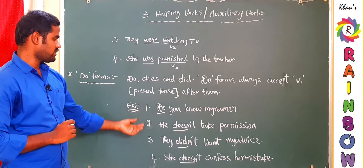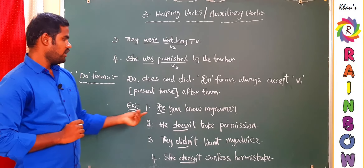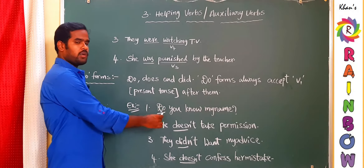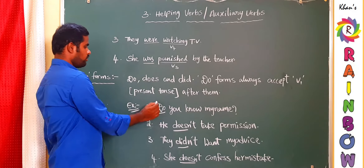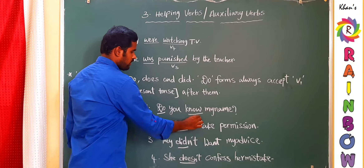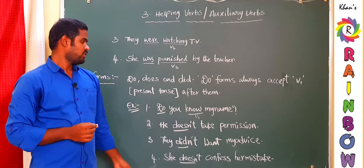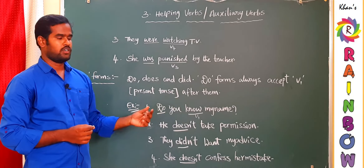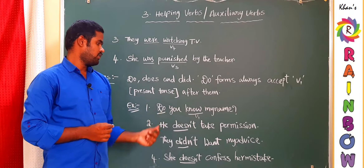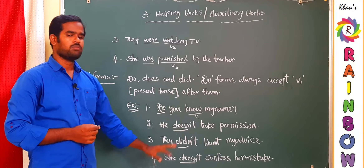Here are examples to understand how Do-forms work. First: 'Do you know my name?' The statement begins with the Do-form 'do,' and the verb used is 'know,' which is V1. The rule is fulfilled. If you write 'Do you knew my name?' that would be wrong.